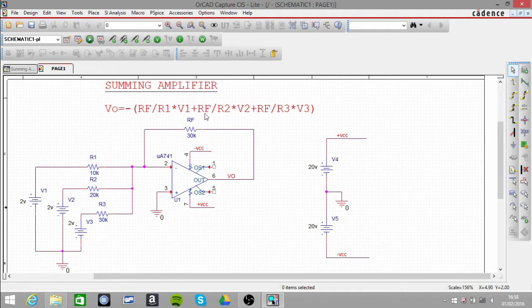And then we have RF over R2, which gives us a gain of 1.5, and that's multiplied by our second input voltage, which is 2V. So that's 3V.